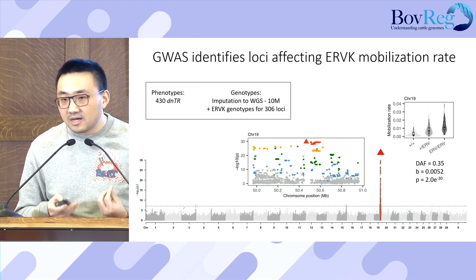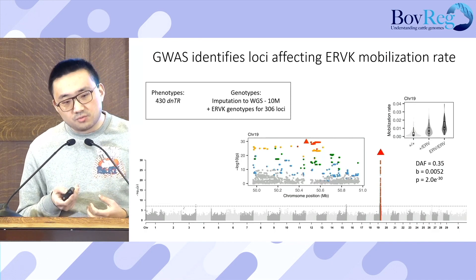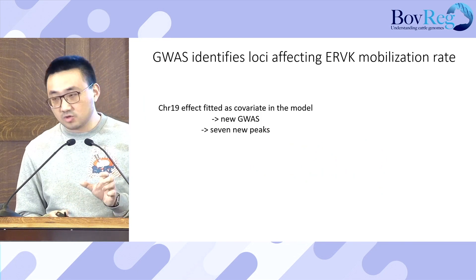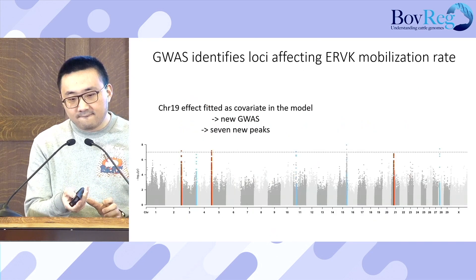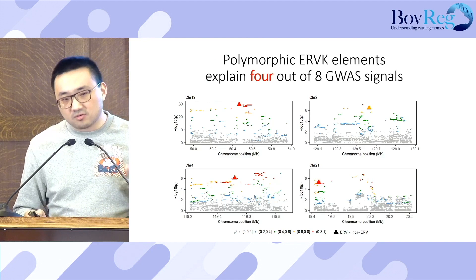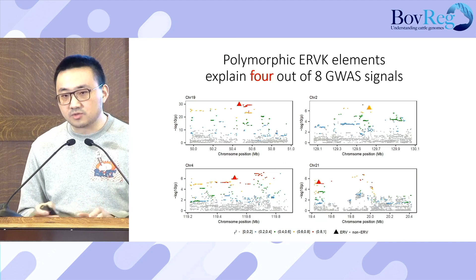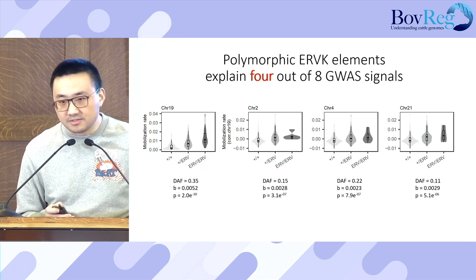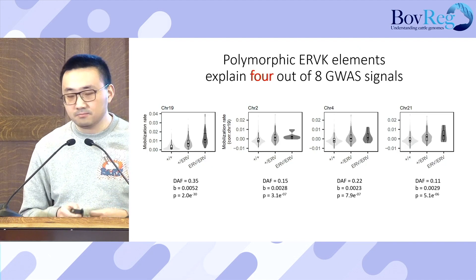The ERVK allele increases the mobilization rate in an additive manner. We then performed a conditional GWAS, using chromosome 19 as a covariate, and identified an additional seven peaks. Zooming in on each of those peaks, four out of the seven have an ERVK underlying in the vicinity and are in high LD with the top SNP. All ERVK alleles increase transposition rate additively. From this we conclude that ERVKs control their own mobilization rate.